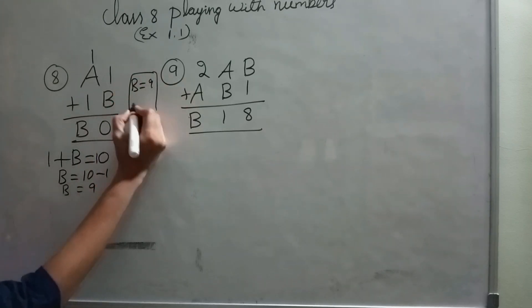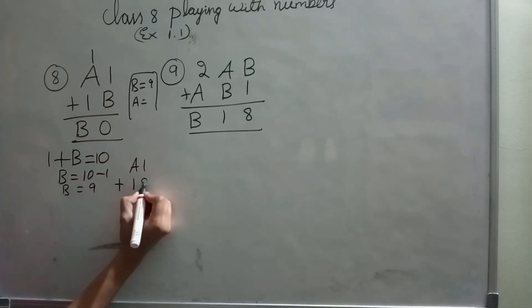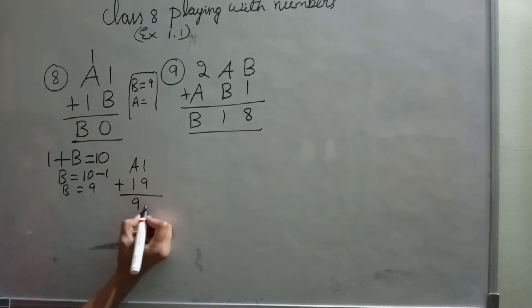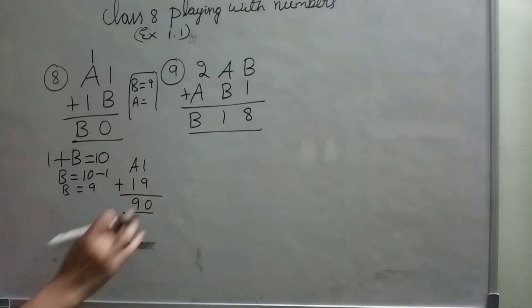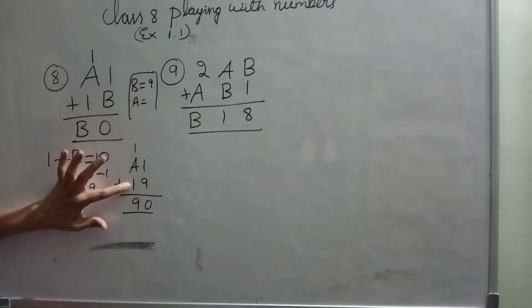Let's check here. A1 plus 19 equals 90. So 9 plus 1 is 10, 1 carry here, here 90. 1 plus 1 is 2. Already I am having 2.